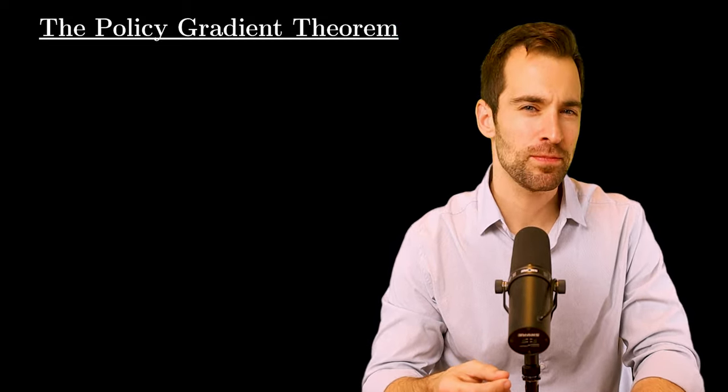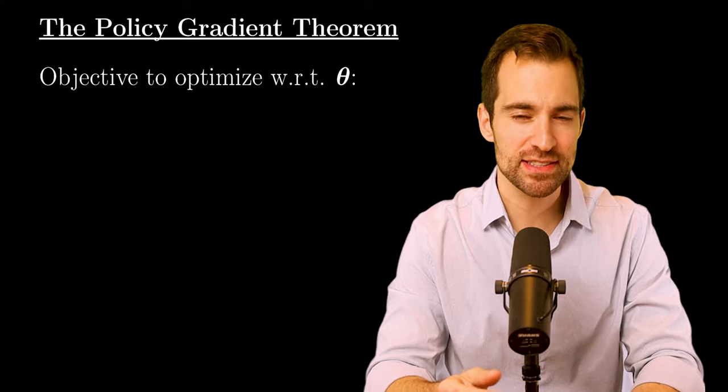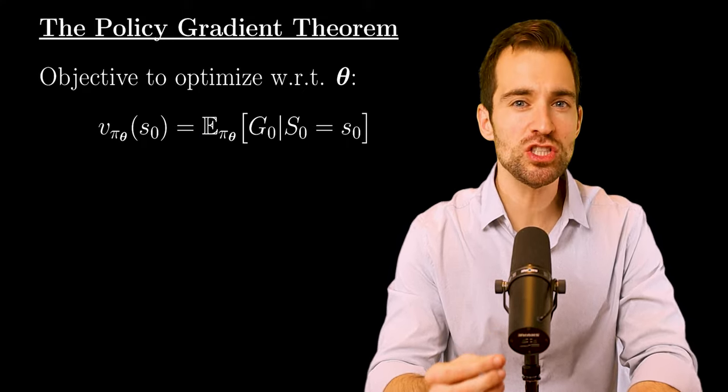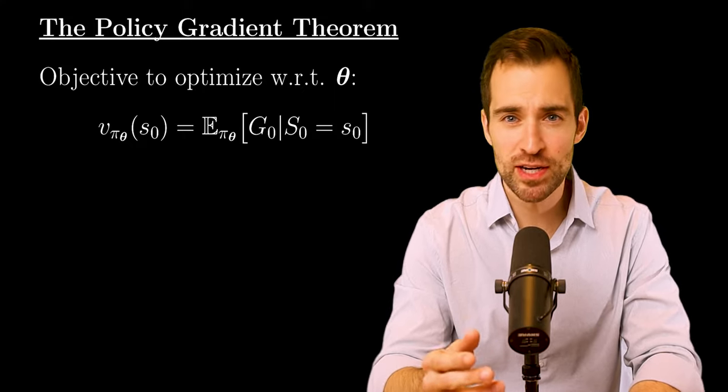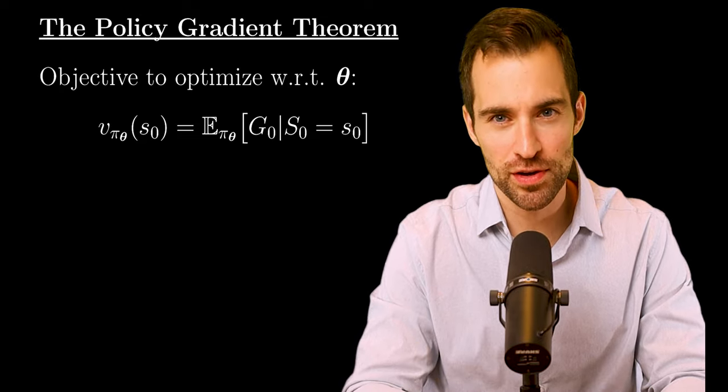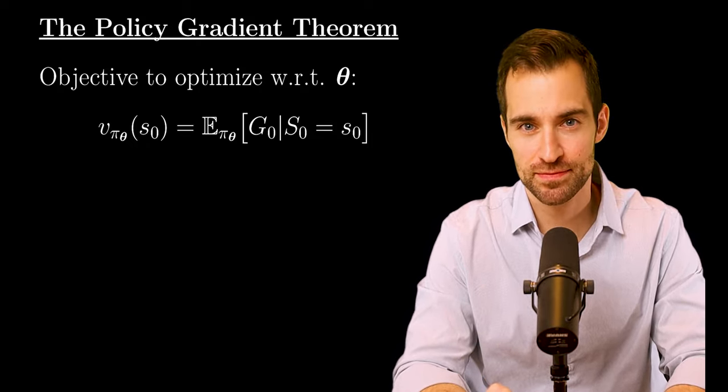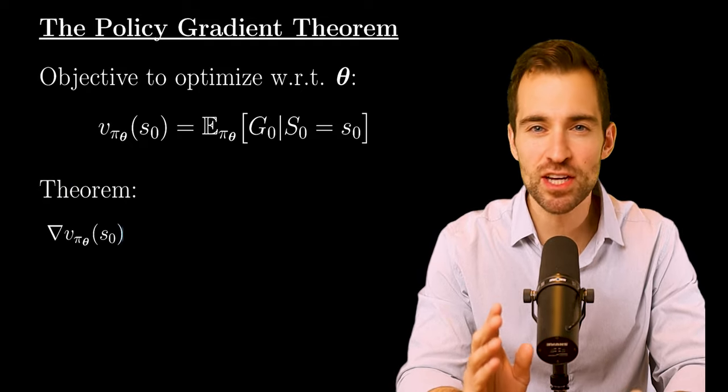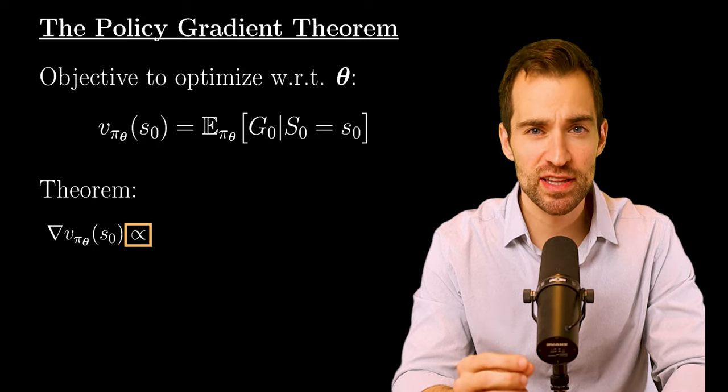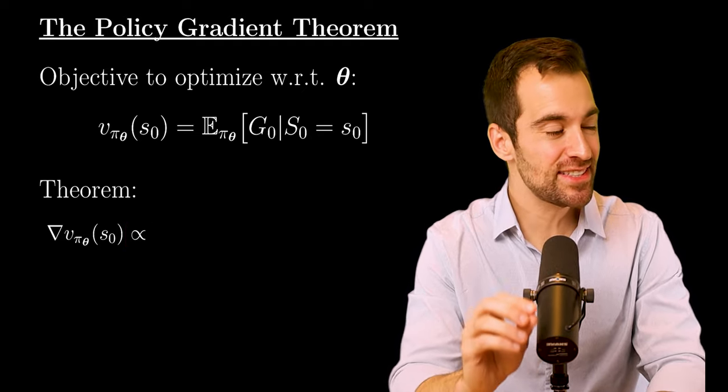What are we actually trying to do when selecting theta? That is, what is our objective to optimize with respect to theta? Well, in the episodic case, it must be the state value of the starting state, which is the expected return from that state. In this case, for simplicity, we're assuming there is a fixed starting state S0. Generalizing to a random starting state doesn't change anything important. The point is, we'd like to choose theta so that we get a high expected return. That's been the goal all along. Also, to emphasize, this is a true theoretical quantity. In practice, we never have access to this. Only estimates of it. Now, the theorem states something remarkably useful. It tells us about the gradient of the state value with respect to theta. In particular, it says it's proportional to something. Proportionality is all we'll ultimately need, since how far we step in the direction is already a choice determined on a problem-specific basis.